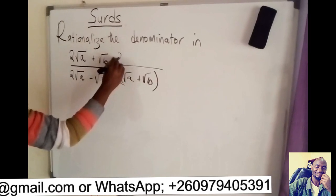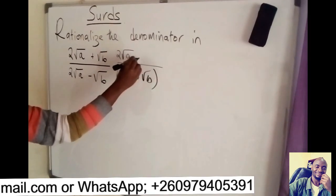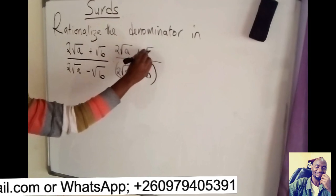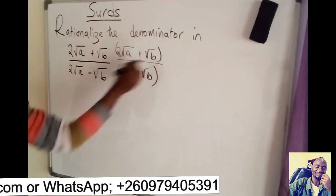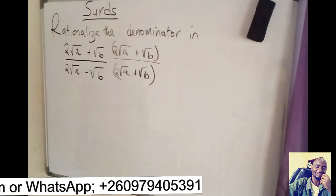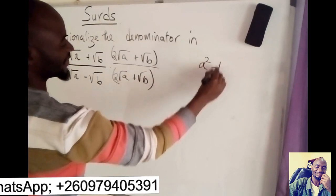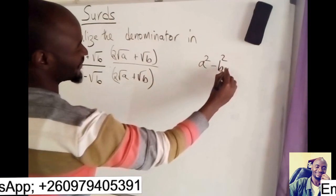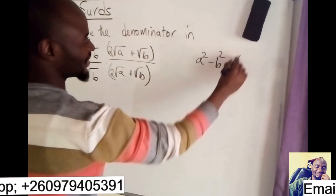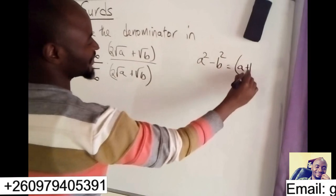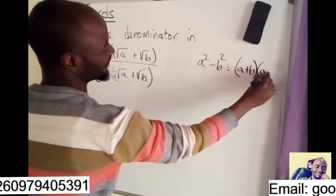Again, you multiply with the same thing up here. Now, this conjugate is gotten from the concept of a factorization of difference of 2 squares. If I have A squared minus B squared, if I try to factorize this one, I'm going to have A plus B, A minus B.